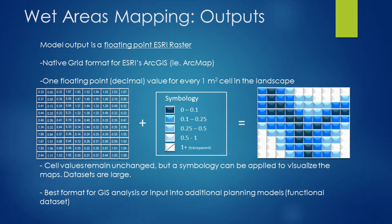Values outside the wet areas are shown as transparent, but it is important to remember that values do exist for every single cell across the landscape. So in terms of integrating this into any other modeling processes, cell values remain unchanged and depending on how we choose to symbolize this data, we can arrive at very different uses. For example, if we symbolized it differently, we could have a dry areas map — querying out areas with very high values for fire fuel load mapping and similar applications.